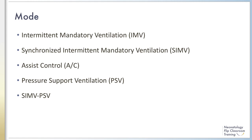There are a variety of modes of ventilation that can be used in the intensive care unit. These modes include IMV, SIMV, AC, PSV, and SIMV-PSV. We will further describe these modes in the coming slides. To allow for spontaneous breathing while intubated, the ventilator must be able to sense the patient's respiratory effort.